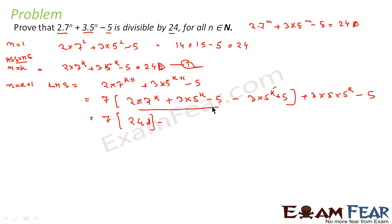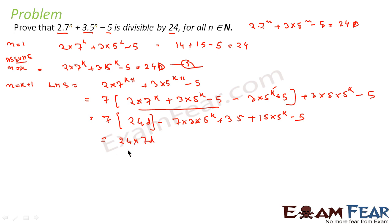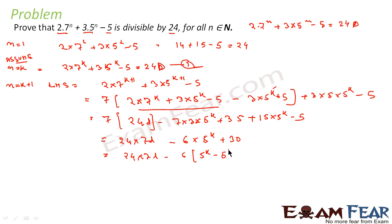So we get 7 into 24d, which is 24 into 7d. I am trying to take 24 common from the remaining terms. After simplification, what we get is 24 into 7d plus 30 into something involving 5 to the power k minus 5.